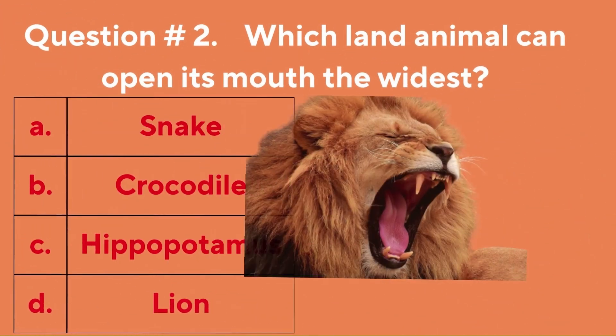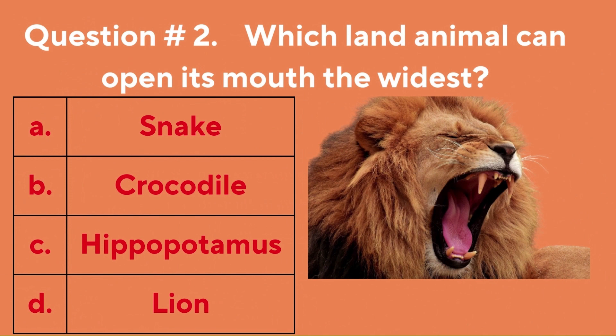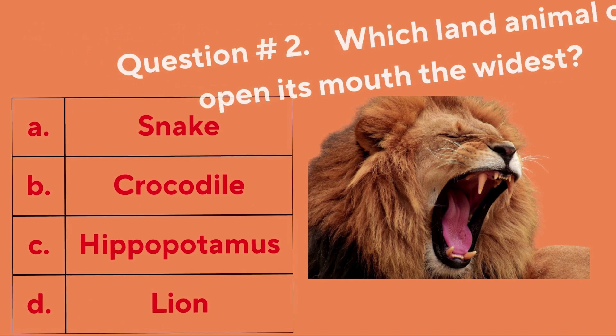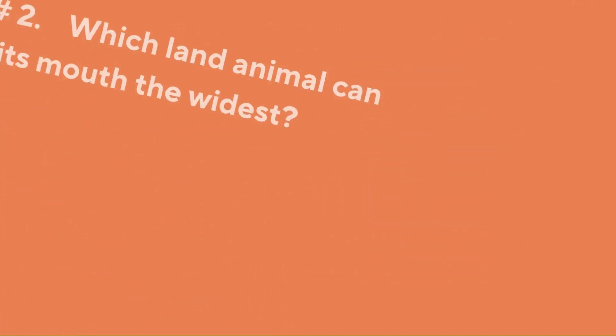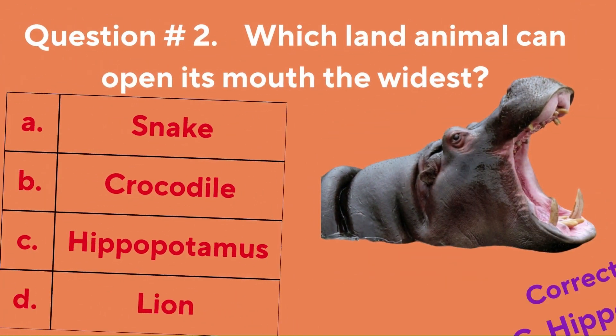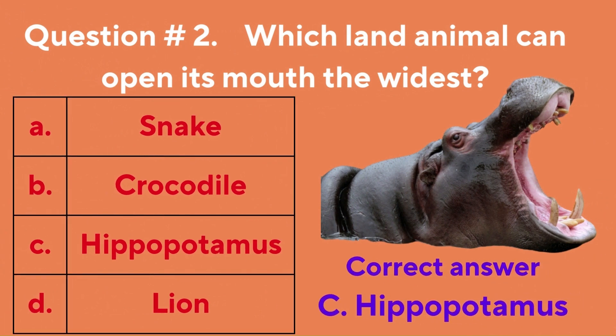Question number two: which land animal can open its mouth the widest? A. Snake, B. Crocodile, C. Hippopotamus, D. Lion. The correct answer is C. Hippopotamus.